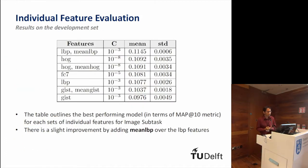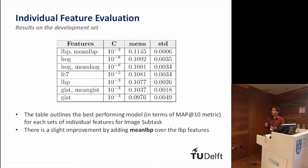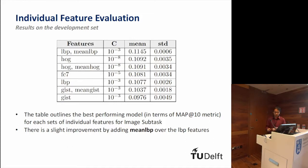This is the result on the development set. By adding the mean LBP, we get a slight increase — from 0.1077 to 0.1145, which is about a 0.006 increase. Although it's not the case for all features — for instance, with histogram of oriented gradients the result is more or less the same — with GIST it also improves performance in terms of MAP value.